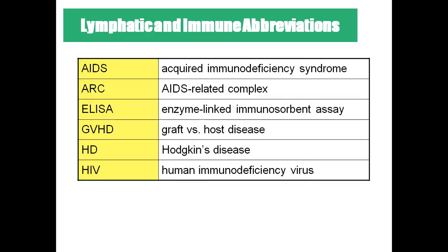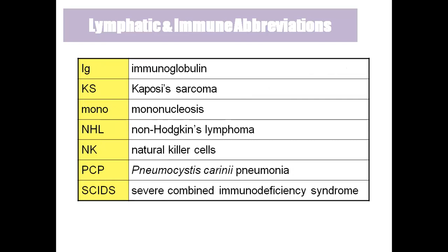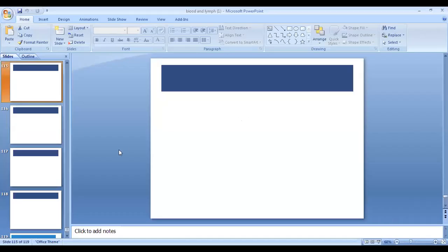Coming to abbreviations: AIDS — acquired immunodeficiency syndrome; ARC — AIDS-related complex; ELISA — enzyme-linked immunosorbent assay; GVHD — graft versus host disease; HD — Hodgkin's disease; HIV — human immunodeficiency virus; Ig — immunoglobulins, also called antibodies; KS — Kaposi's sarcoma, skin cancer in AIDS patients; mono — mononucleosis, viral infection; NHL — non-Hodgkin's lymphoma; NK — natural killer cells; PCP — Pneumocystis carinii pneumonia; SCID — severe combined immunodeficiency syndrome.